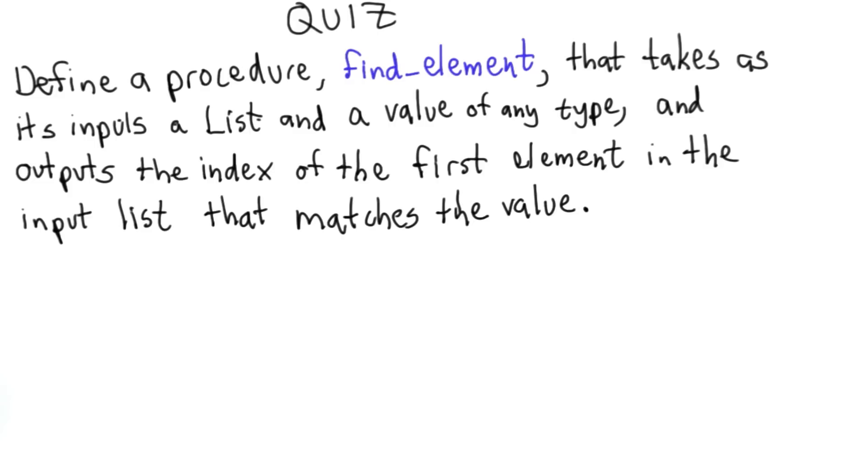Your goal is to define a procedure named find_element that takes two inputs. The first input is a list, can be a list of any type of element. And the second input is a value, which can be of any type. And it outputs the index of the first element in the input list that matches the value that's passed in as the second input.